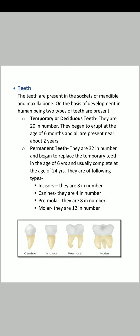Teeth are present in the sockets of mandible and maxilla bones. On the basis of development in human beings, two types of teeth are present. First are temporary or deciduous teeth — present in childhood, 20 in number. They begin to erupt at the age of 6 months and all are present by about 2 years. Then permanent teeth begin to replace them at age 6, are 32 in number, and usually complete by age 24.